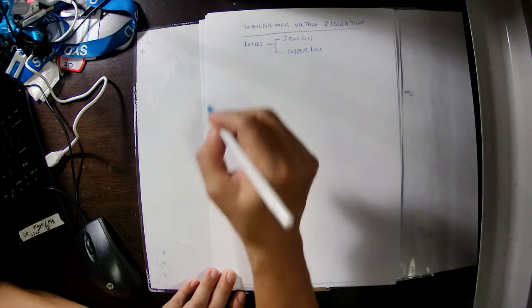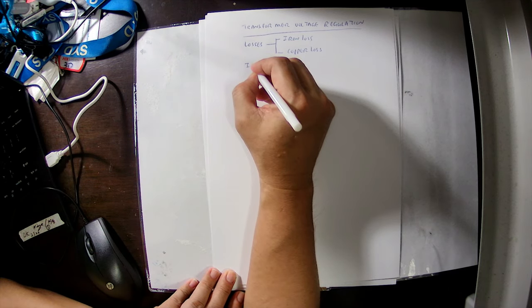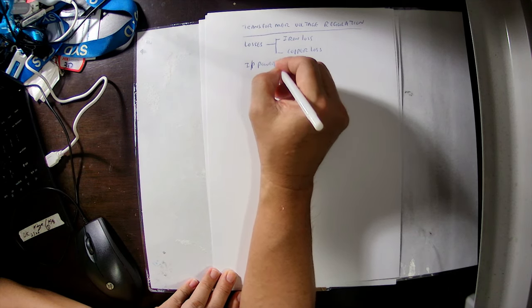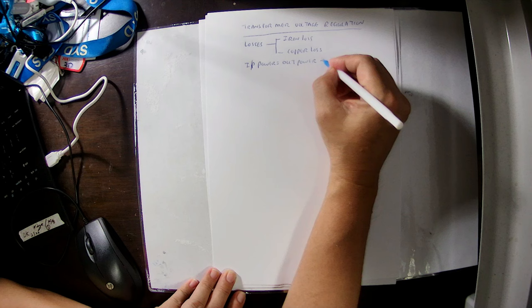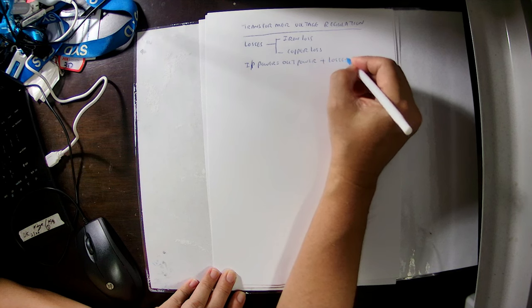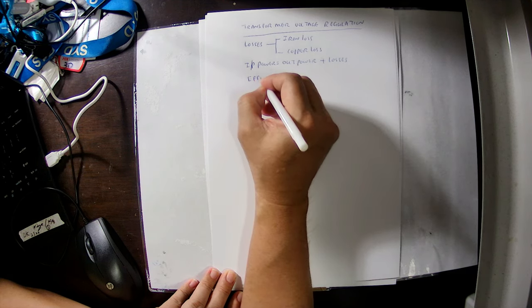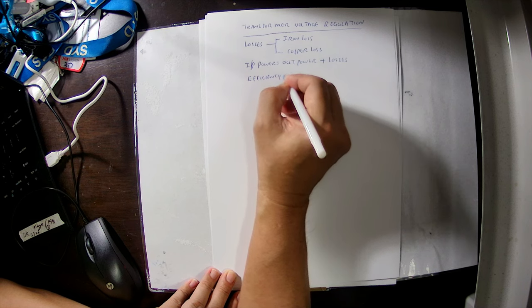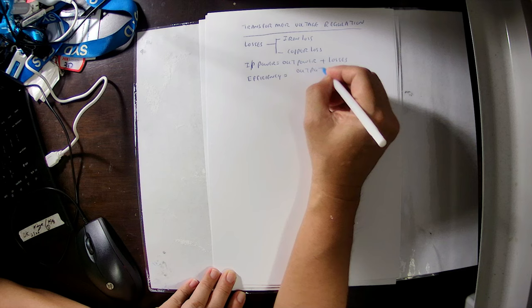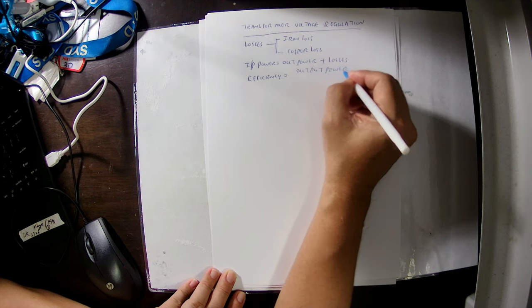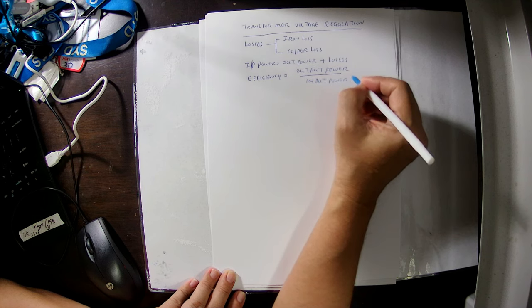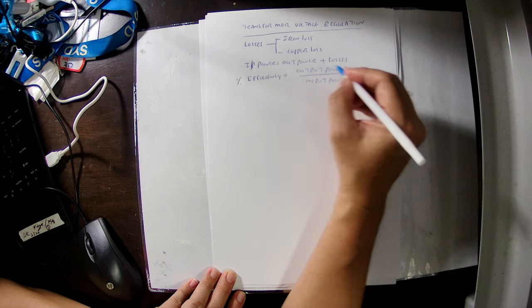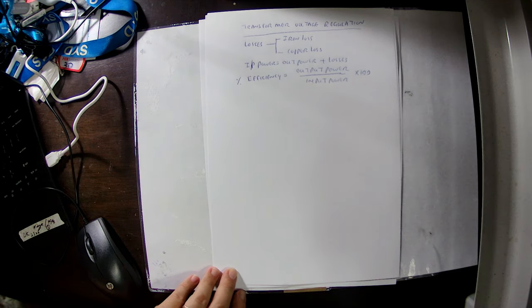Therefore, the input power equals output power plus losses. Efficiency equals output power divided by input power, and percentage efficiency is efficiency multiplied by 100. This is how we calculate transformer losses and efficiency.